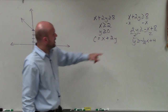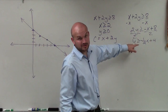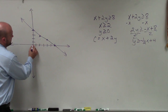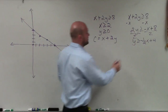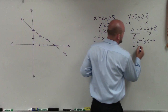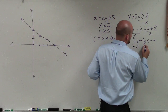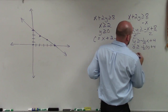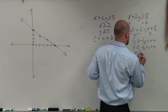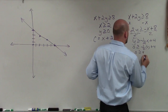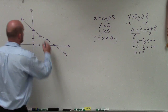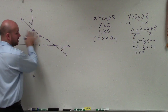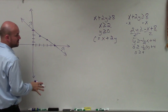Since y is greater than or equal to, I'm going to use a test point. I'll use (0, 0) and plug it in to determine if I'm shading up or down. I can see 0 is greater than or equal to 4, which is false. Therefore, my feasible region is going to be facing up, above this boundary line.